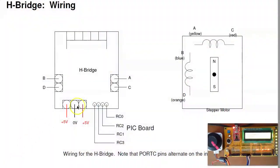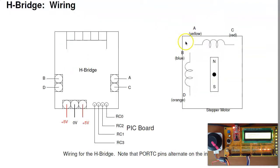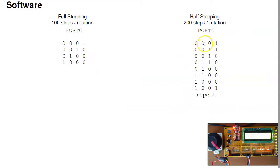There's also half-stepping. That takes the 1, 2, 4, 8 and inserts both of them on. What half-stepping does is I first have it point up, then A and B are turned on, pointing at 45 degrees. Then B is turned on, 90 degrees. B and C, 135 degrees. Half-stepping gives you 200 steps per rotation.